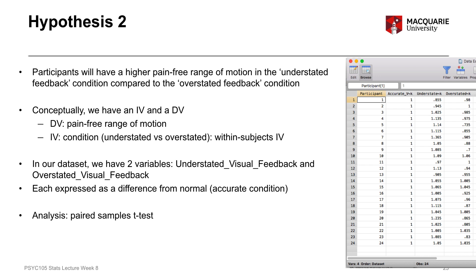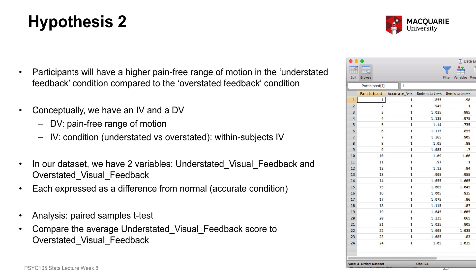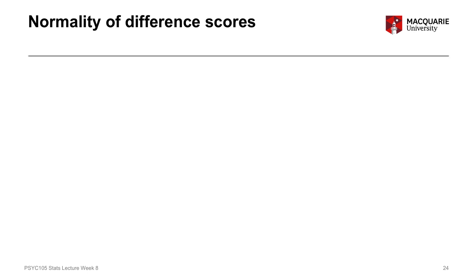We need a paired samples t-test rather than an independent samples t-test because it's the same people giving us two sets of scores. We want to compare the average score on the understated visual feedback to the overstated visual feedback. It's really important to check assumptions and see whether your data are appropriate for the test, because if your data aren't appropriate, the results aren't actually telling you what you think they're telling you — they're not necessarily accurate or meaningful.